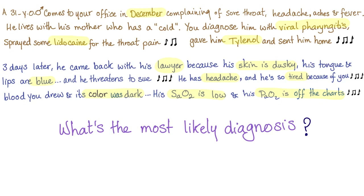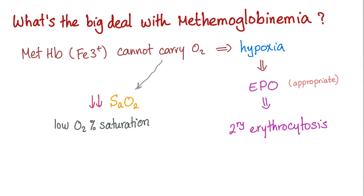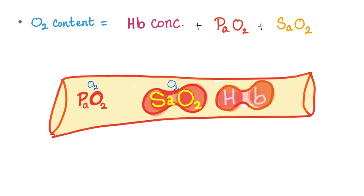We discussed this vignette in the previous video, but if this is the first time, pause and try to answer it. The answer is, of course, methemoglobinemia. Fe3 cannot carry oxygen because only Fe2 carries O2. Oxygen content equals hemoglobin concentration plus PaO2 plus SaO2.